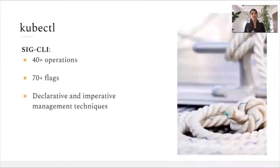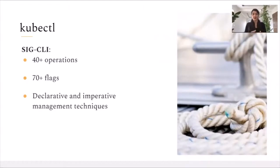When we refer to kubectl, we refer to a CLI which currently resides under the Kubernetes community umbrella. Currently, kubectl offers more than 40 operations — these are actions we can perform on top of resources, such as create, delete, run, get, and many more. These operations are associated with more than 70 flags, which will allow a tailored and custom experience. We'll be able to either provide more information when creating a cluster, or specify more details when we try to get information from the cluster.